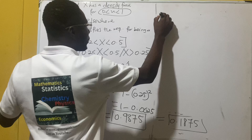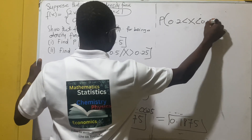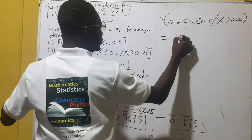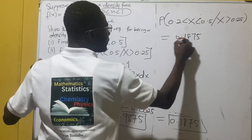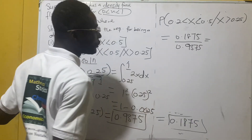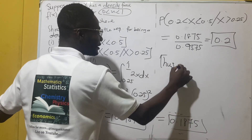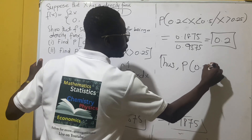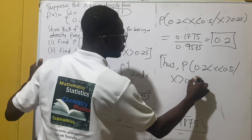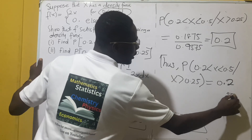Our conditional probability P(0.25 < x < 0.5 | x > 0.25) equals 0.1875 over 0.9375, which equals 0.2. So the probability of 0.2 < x < 0.5 given that x is greater than 0.25 is equal to 0.2.